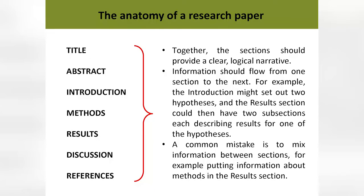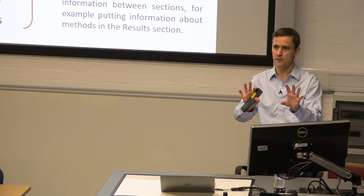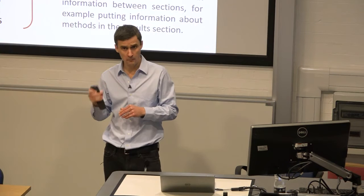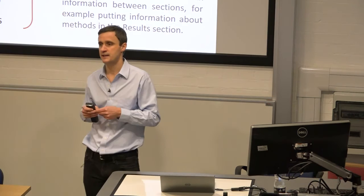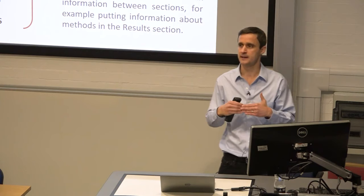Taken as a whole, these sections should work very closely together. The better you divide out the sections, the easier you will find it to get a good flow of information through the paper. They should provide a clear and logical narrative — a flow of information from one section to the next. For example, the introduction might set out two hypotheses, and then in the results section you might have two subsections each addressing those hypotheses. A real common mistake is to mix information between sections — in particular, putting information about methods in the results section. Be quite rigid about which section particular statements should go in.